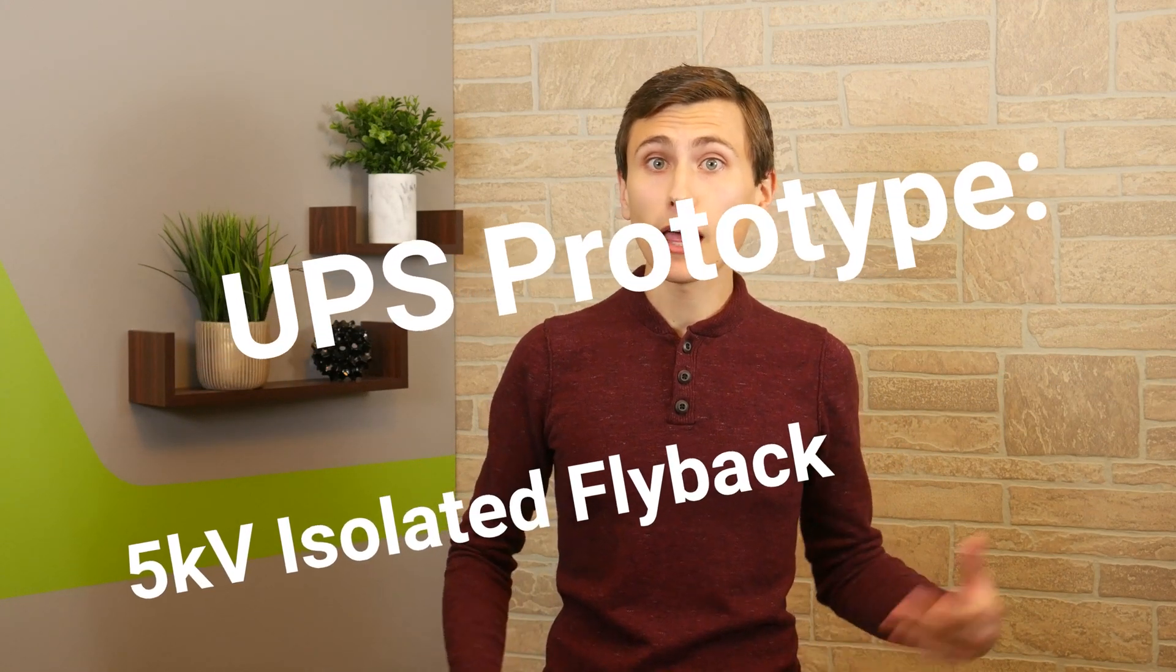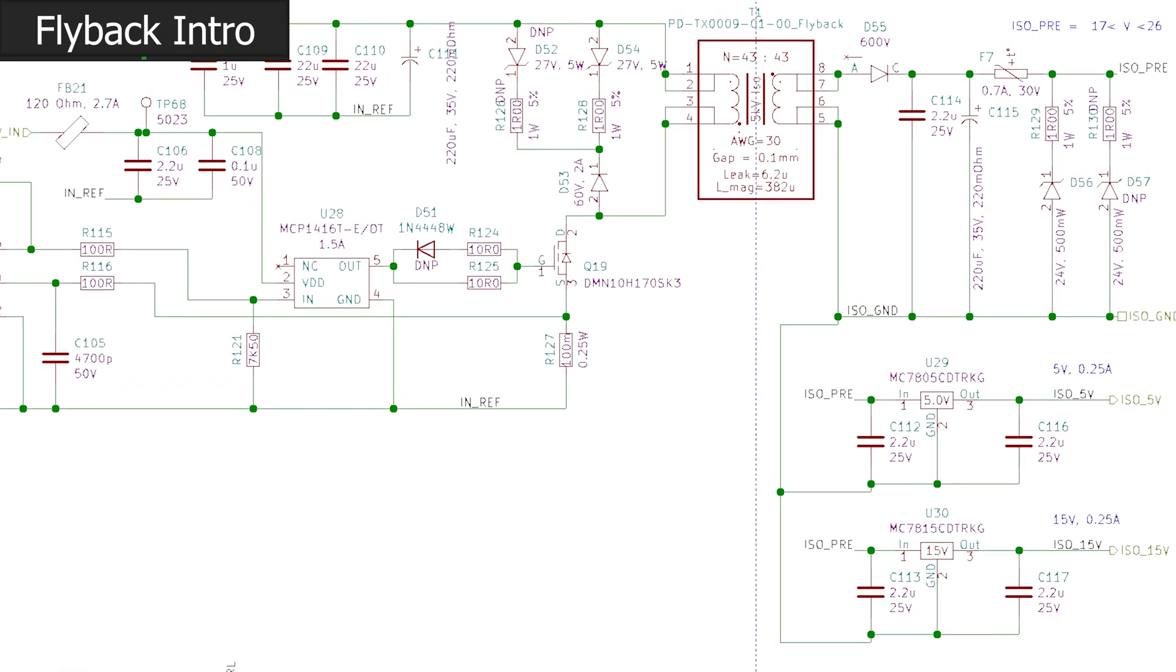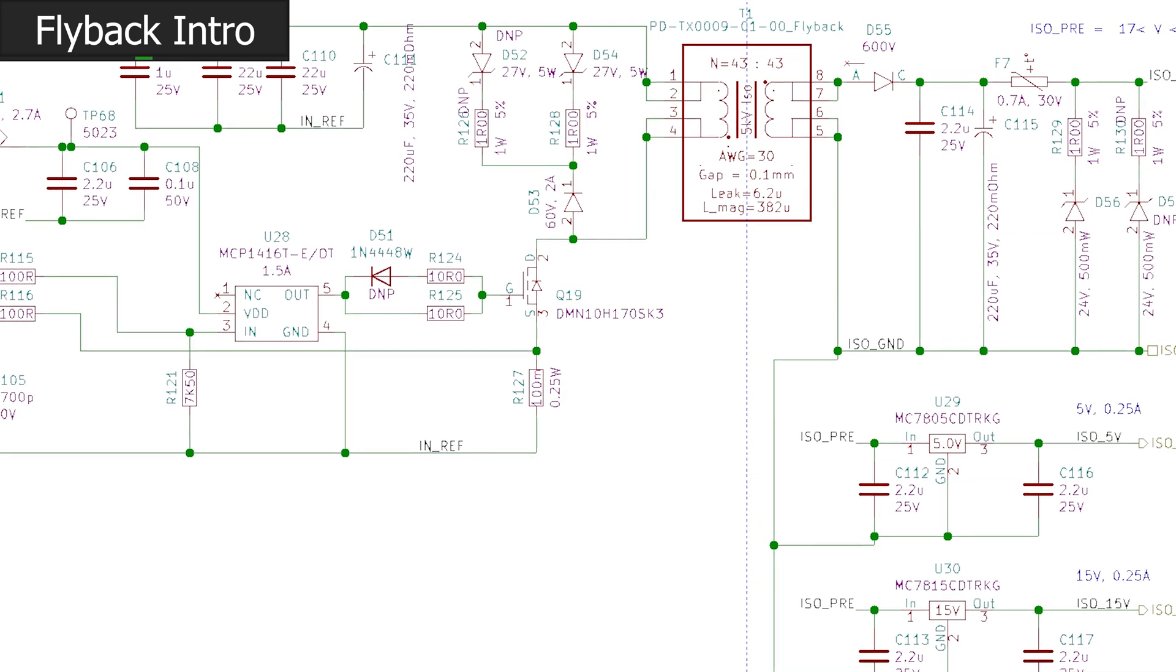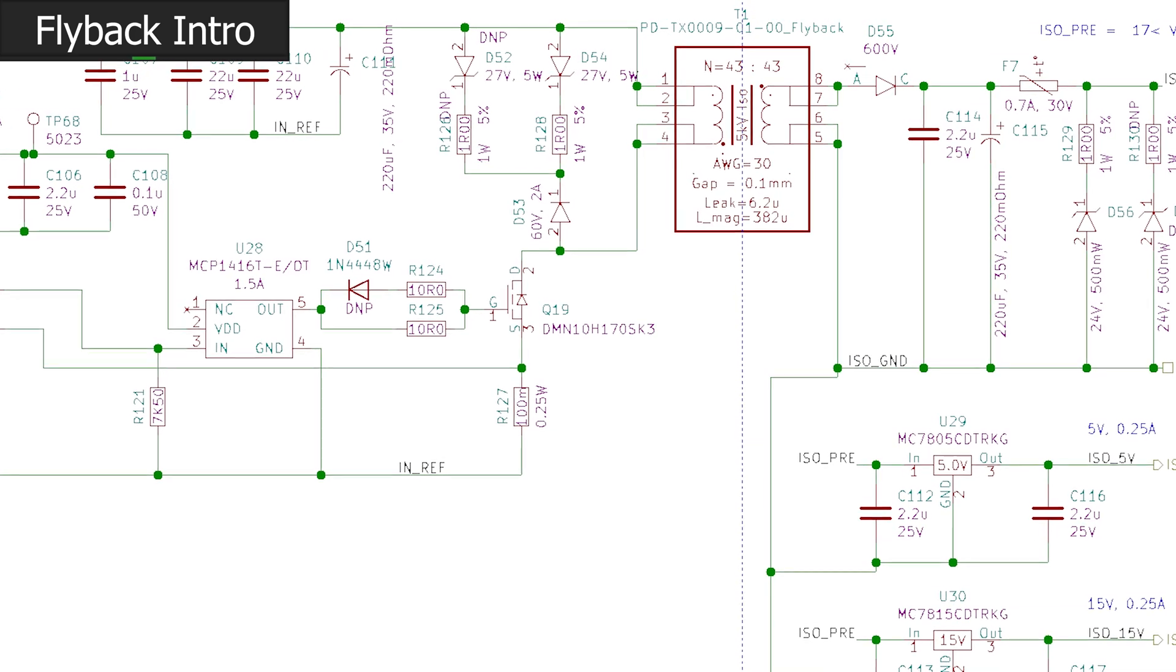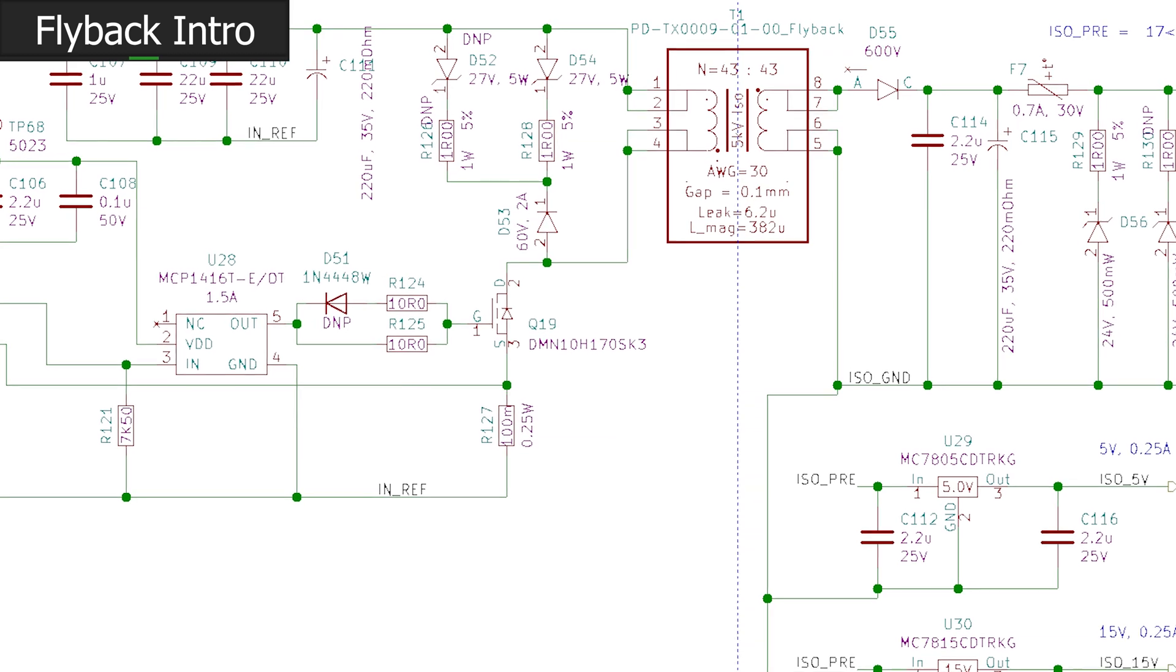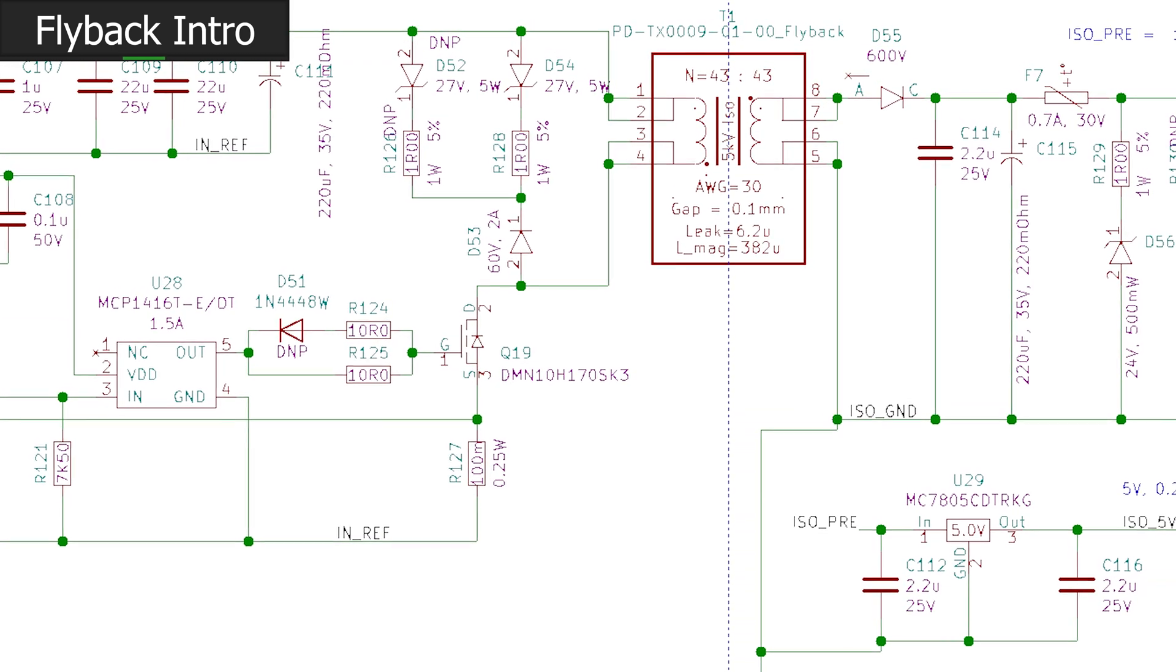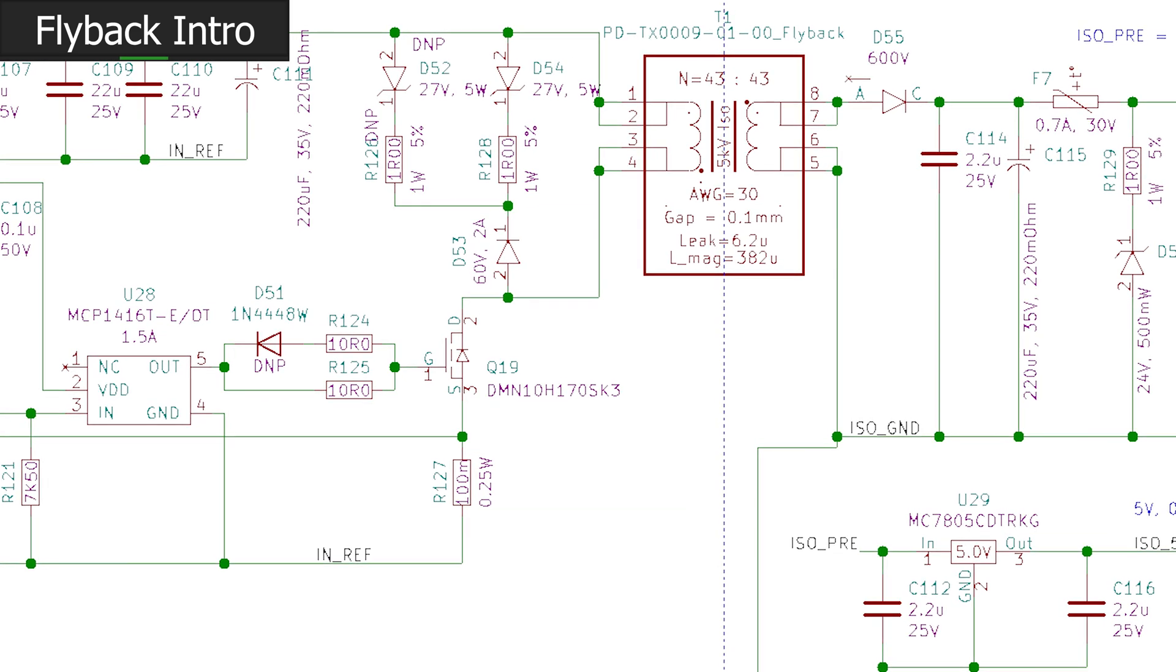I had a great time hanging out with you during our stream a couple weeks back. It was a pretty fun time. We assembled the isolated flyback converter, which provides both 5 volts and 15 volts to any high voltage analog circuits, gate drivers, or really whatever we deem necessary. We just need a little bit of power, so it's pretty awesome. 5 kilovolt isolation from primary to secondary side, 5 and 15 volt outputs.